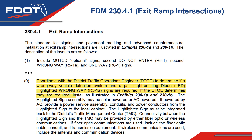First, we'll look at FDM 230.4.1, which is the exit ramp intersections. There was only one change to this subsection and it was to the ninth and last item on the list. The request here was to coordinate with the District Traffic Operations Engineer to determine if the Wrong Way Vehicle Detection System and a pair of LED highlighted wrong way signs are required. If the DTOE determines they are required, then we'll follow the criteria already established in the previous version of the FDM. When determining whether to use the LED highlighted wrong way signs, coordination must take place prior to that determination and it should be documented in the design file.